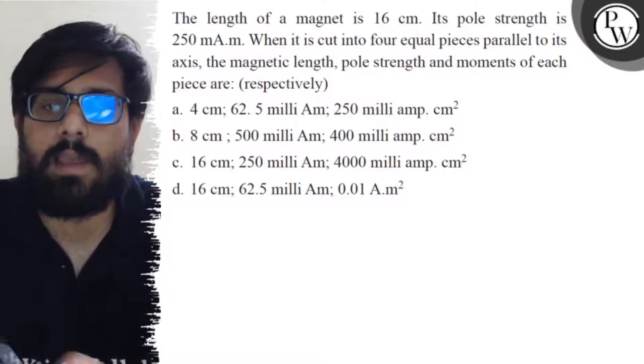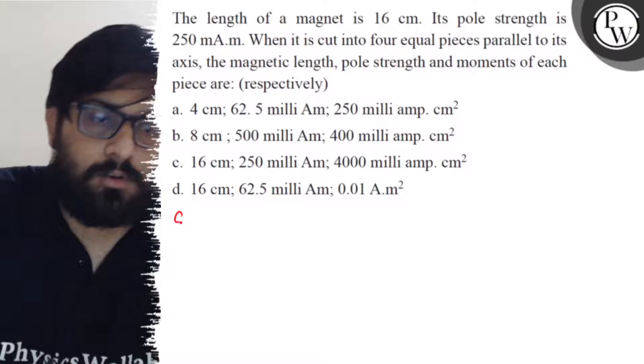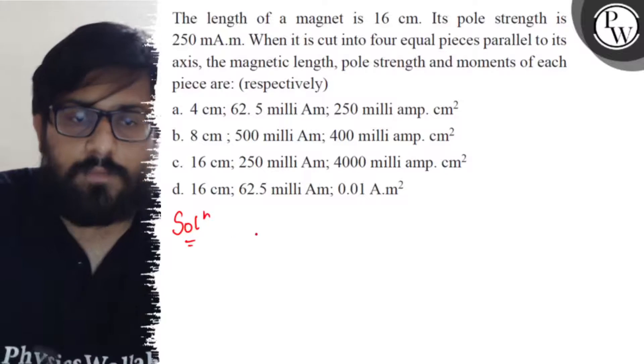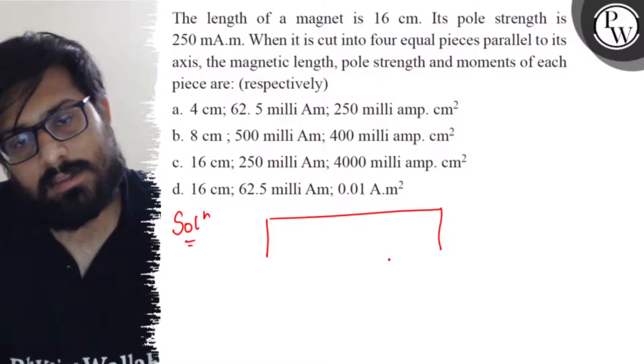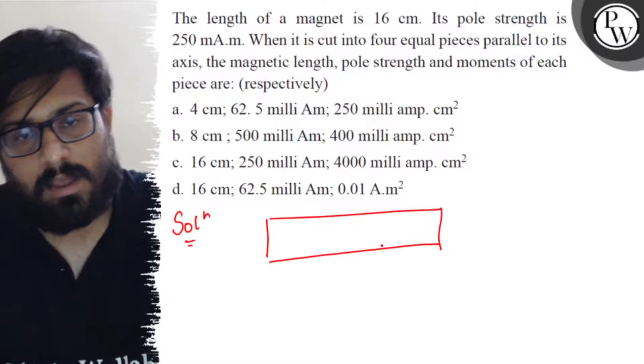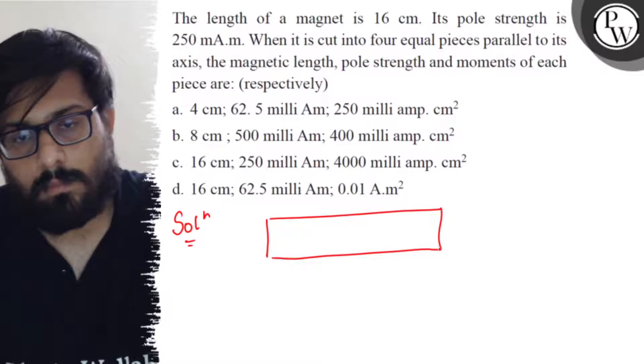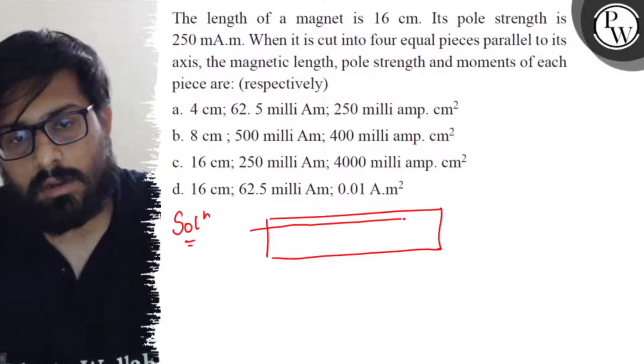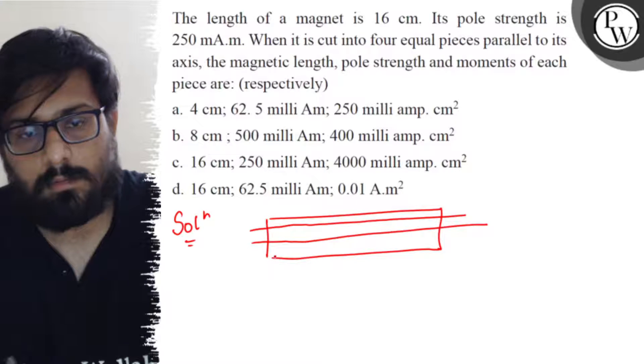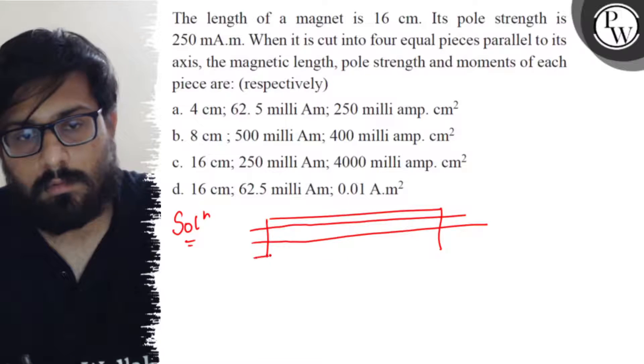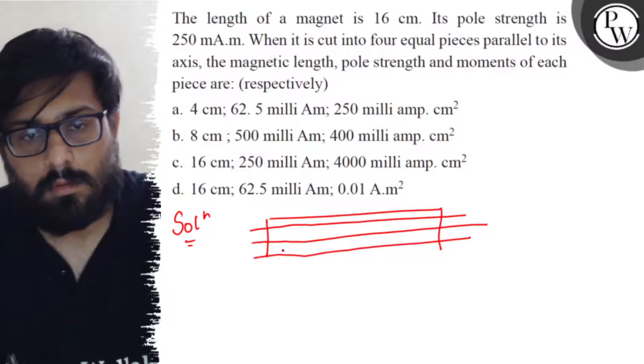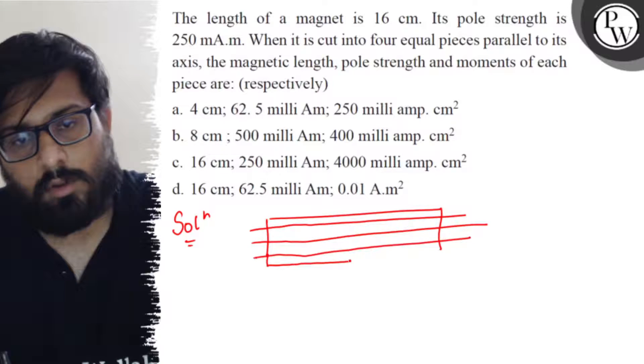and 0.01 A·m². So in this question, if you cut a bar magnet like this, you have this bar magnet, and you cut it into four equal parts.